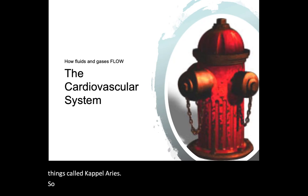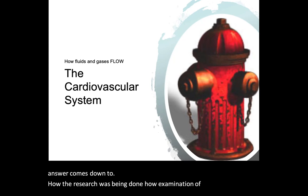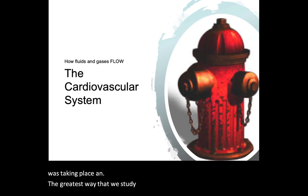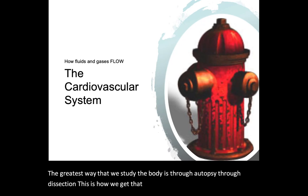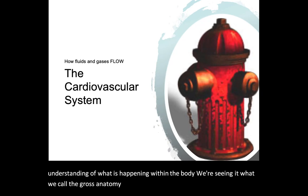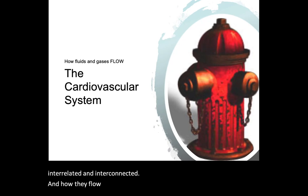The answer comes down to how research was being done — how examination of the human body was taking place. The greatest way we study the body is through autopsy, through dissection. This is how we get the physical, anatomical understanding of what is happening within the body — the gross anatomy. We see how tendons, muscles, and bone connect, how arteries and veins are interrelated and flow into the heart.